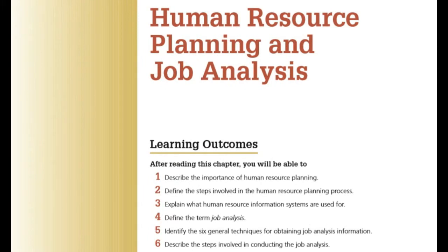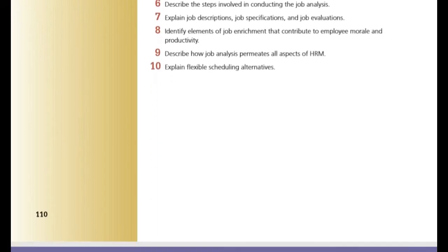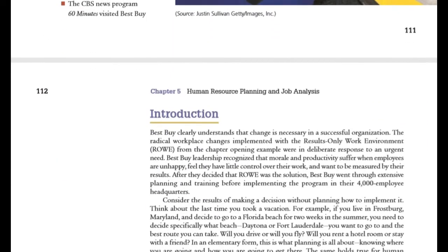Bismillah rahman rahim. Let's start with the chapter of Human Resource Planning and Job Analysis, from Fundamentals of Human Resource Management by Robbins and Decenzo. In previous lectures we talked about the HRM process and its challenges. Now let's start talking about the first function of HRM, which is staffing. The first sub-function is human resource planning and job analysis, then recruitment, and then selection.